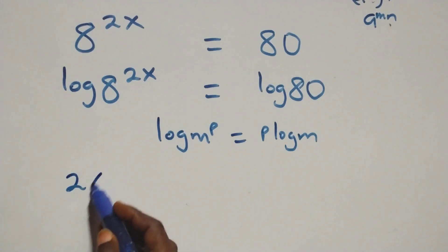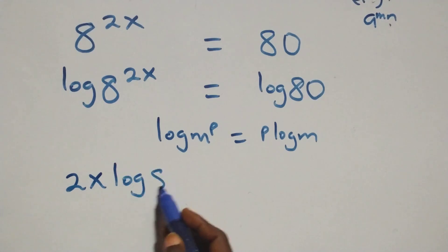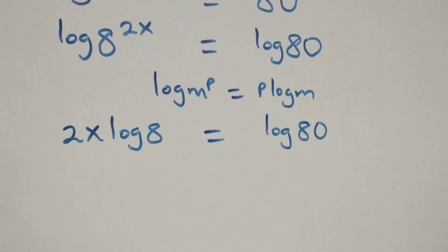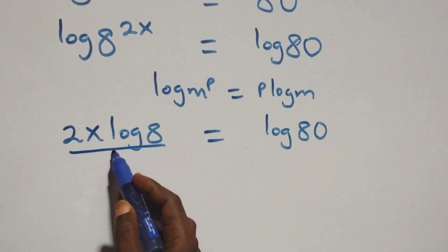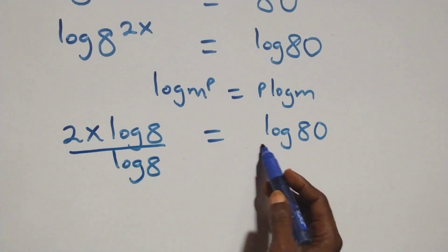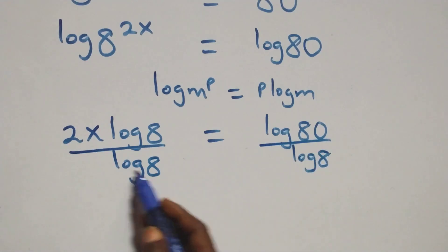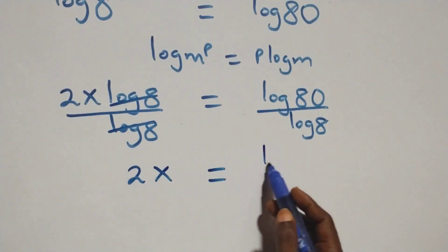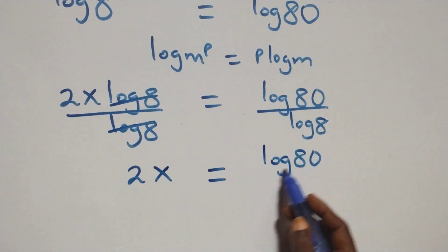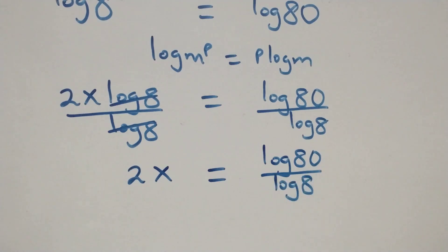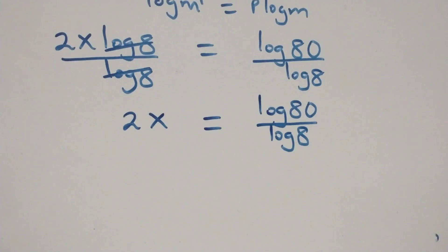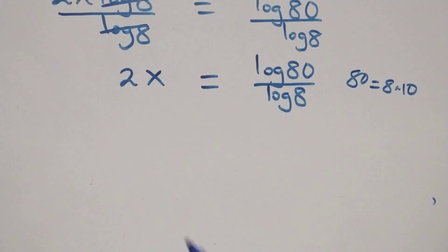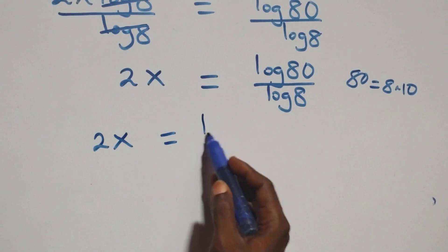So this becomes 2x times log 8 equals log 80 on this side. Then we divide both sides by log 8 — divide this side by log 8 and also divide this side by log 8. So we have 2x equals log 80 over log 8.